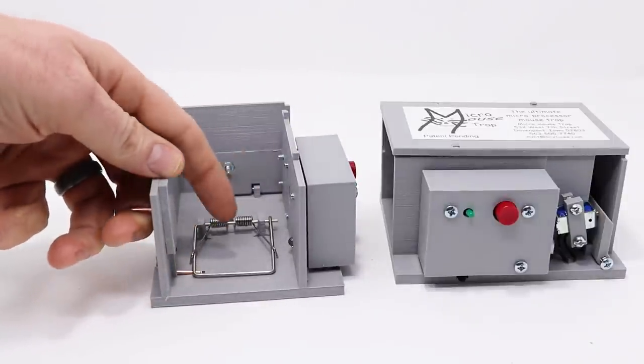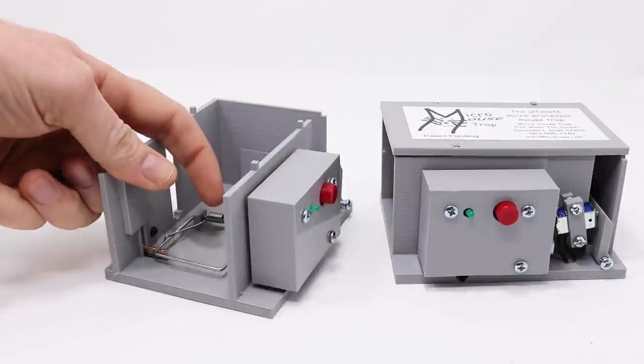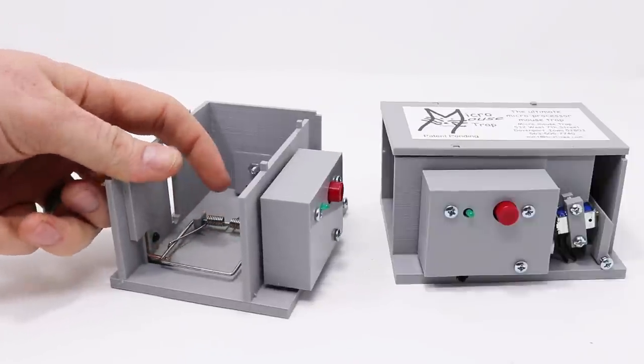After it's set, the mouse will go in there to get the bait, trip the light beam, and set off the kill bar. It's a foolproof way to catch a mouse every time.